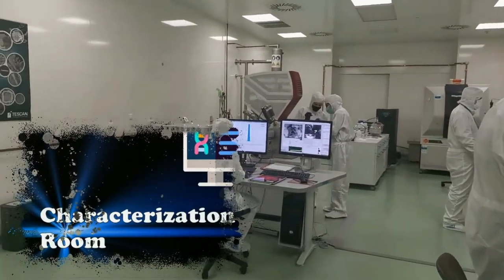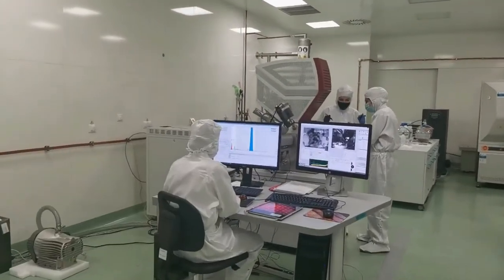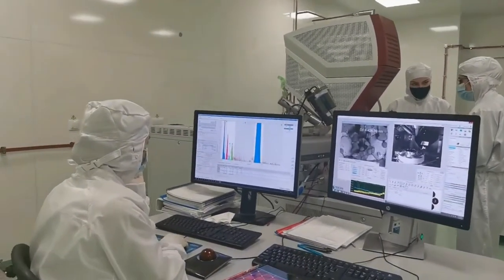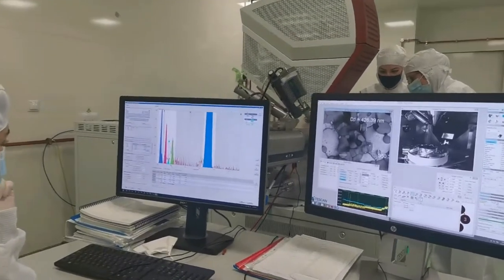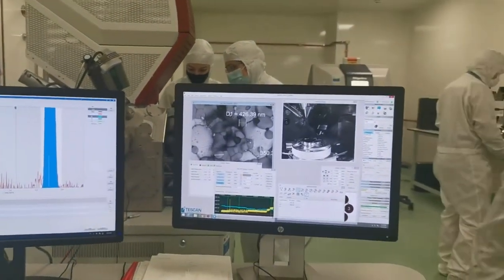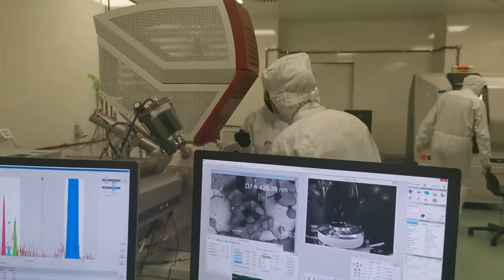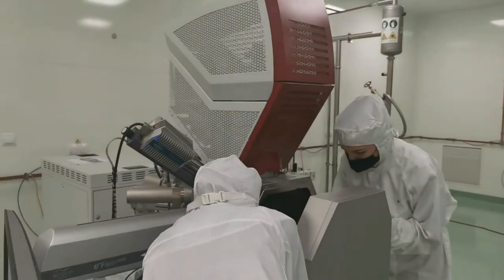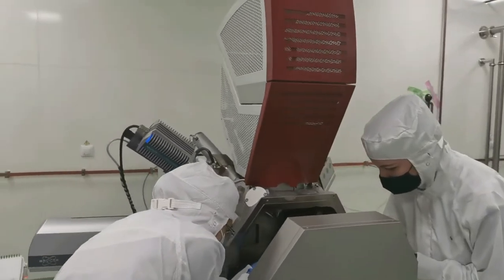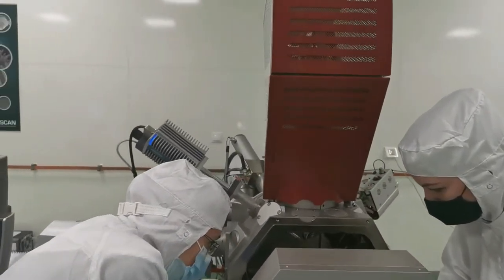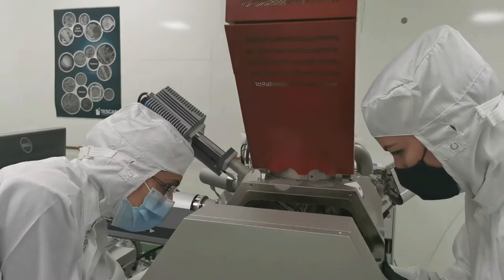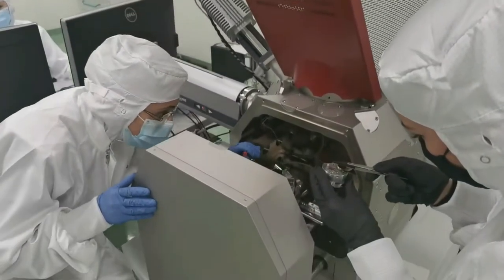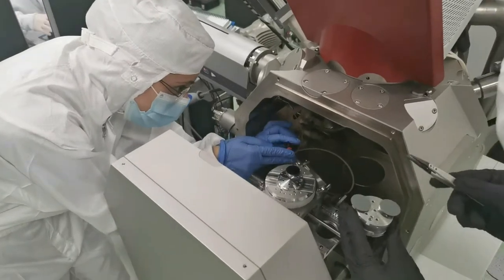The characterization room is dedicated to the analysis and examination of the obtained targets. Here, several equipment are available. First of them, the scanning electron microscope is supplied with an energy dispersive X-ray spectrometer for the elemental analysis and an electron backscatter diffraction detector for crystallographic characterization. The SEM is equipped with an electron beam lithography tool for nano- and microstructuring of the surface of the targets.